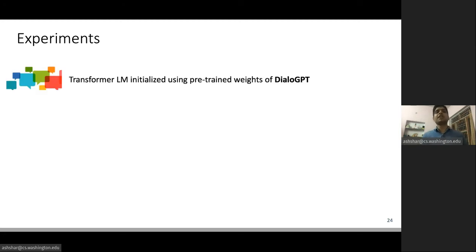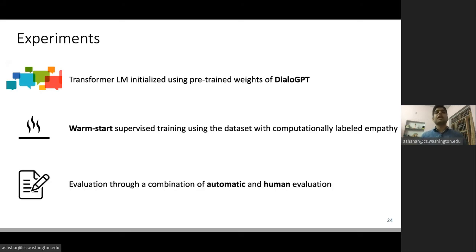For experiments, we initialize our transformer language model using the pre-trained weights of DialoGPT. DialoGPT is GPT-2 pre-trained on Reddit conversations. Next, we do a warm start via supervised training, and for this we use the computationally labeled empathy dataset that we developed earlier. And finally, for evaluation, we combine automatic evaluation with expert-based human evaluation. We do this because evaluating complex constructs such as empathy is fundamentally challenging. Automatic metrics on these constructs can often be noisy, and therefore you really need humans to validate your performance.